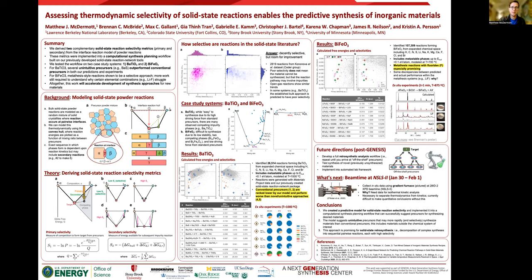Using our synthesis planning workflow, we calculated over 26,000 reactions producing barium titanate. We picked 12 of them spanning a range of driving forces and selectivities. We found several unintuitive precursor combinations, such as barium sulfide and sodium barium titanate, that ranked highly in our predictions, and when we tested them experimentally, produced entirely barium titanate product in less than 20 minutes.